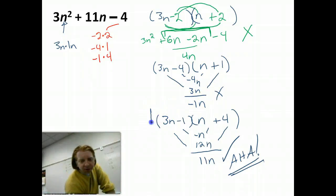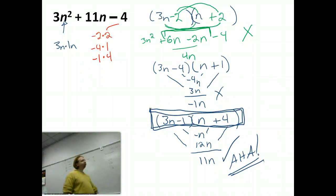So my factors must be 3n minus 1 and n plus 4. I'm going to take a bit more. Thank you. As for now.